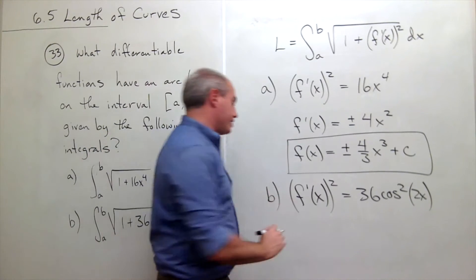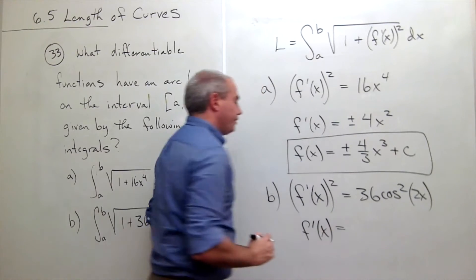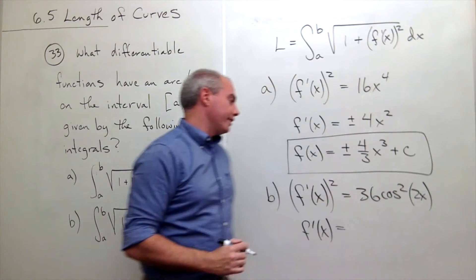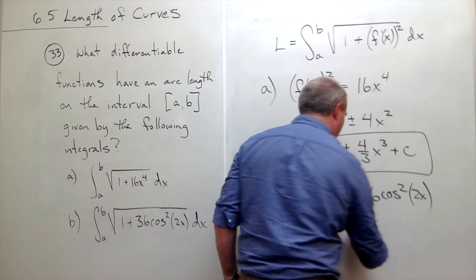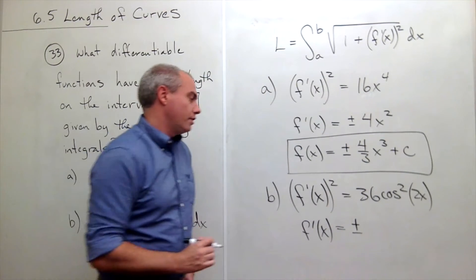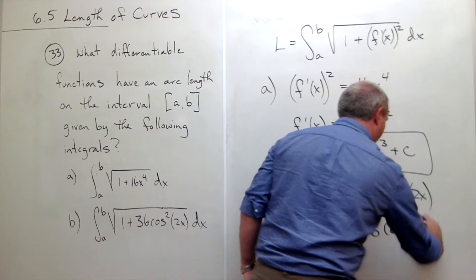So similarly, if I just want to know, then what's the derivative function? It's going to be the square root of this guy. Well, the square root of that guy is plus or minus, that's important, 6 cosine of 2x.